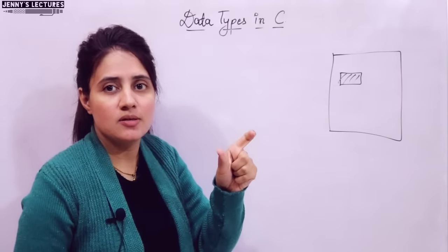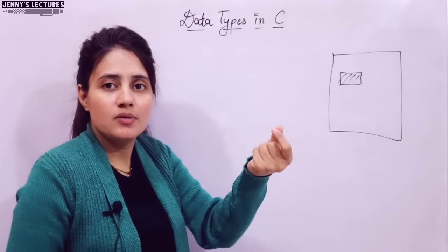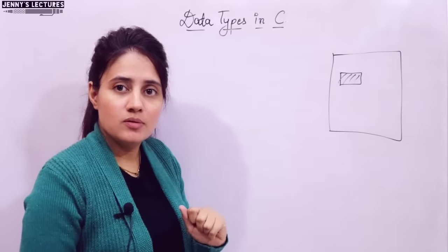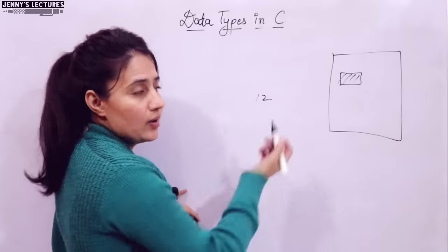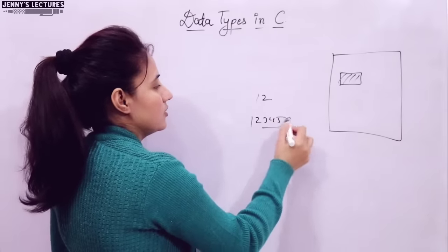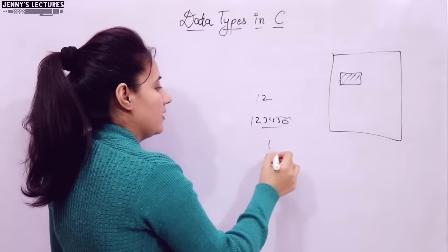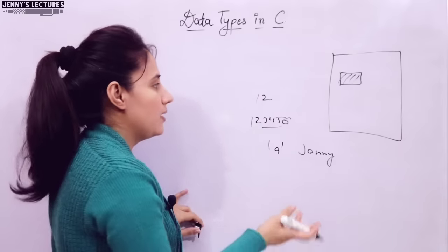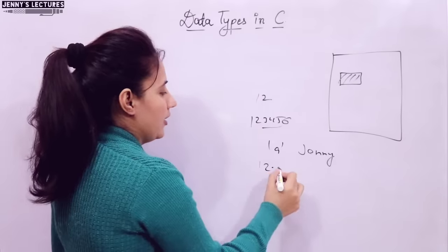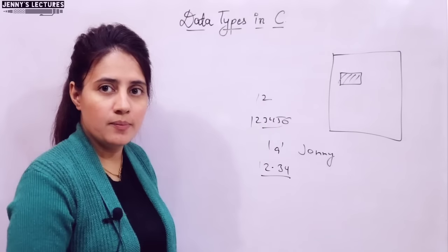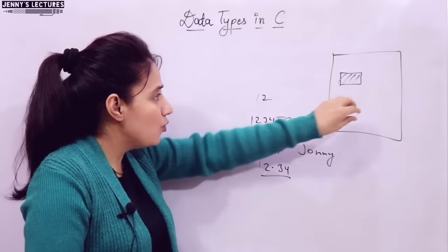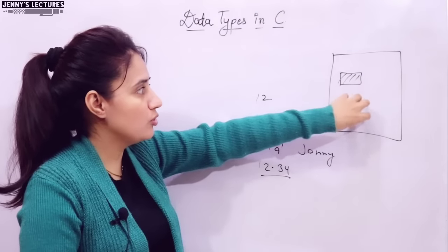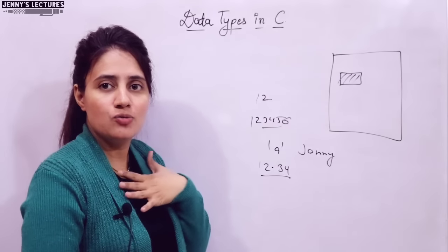Data types, as the name suggests, tell you the type of data. You want to store some data in memory, but which type of data? Whether it's a number like 12, or a long number like 123456, or whether it's a character like A, or a string like Jenny, or maybe a floating point number like 12.34. So which type of data you want to store — according to that, the computer is going to reserve some memory for us so that we can use that memory.